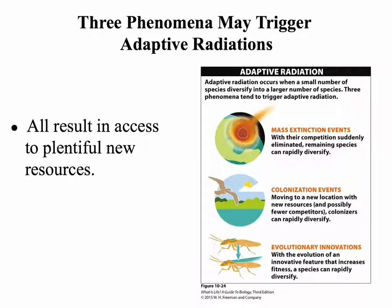Three phenomena can trigger adaptive radiations: mass extinctions, colonization events, and evolutionary innovations. All of these result in access to plentiful new resources, which opens up the opportunity for speciation to occur.